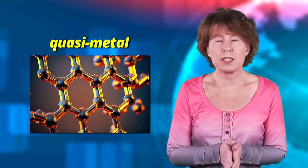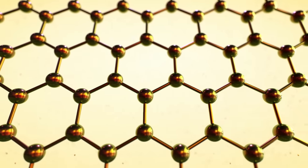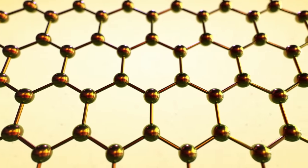Graphene is considered a quasi-metal, because while it strictly speaking isn't a metal, it conducts electricity much like one. And this means it can't fulfill the function of a transistor to act as a switch, at least not the way it is. Scientists have come up with several ways to try and fix that.